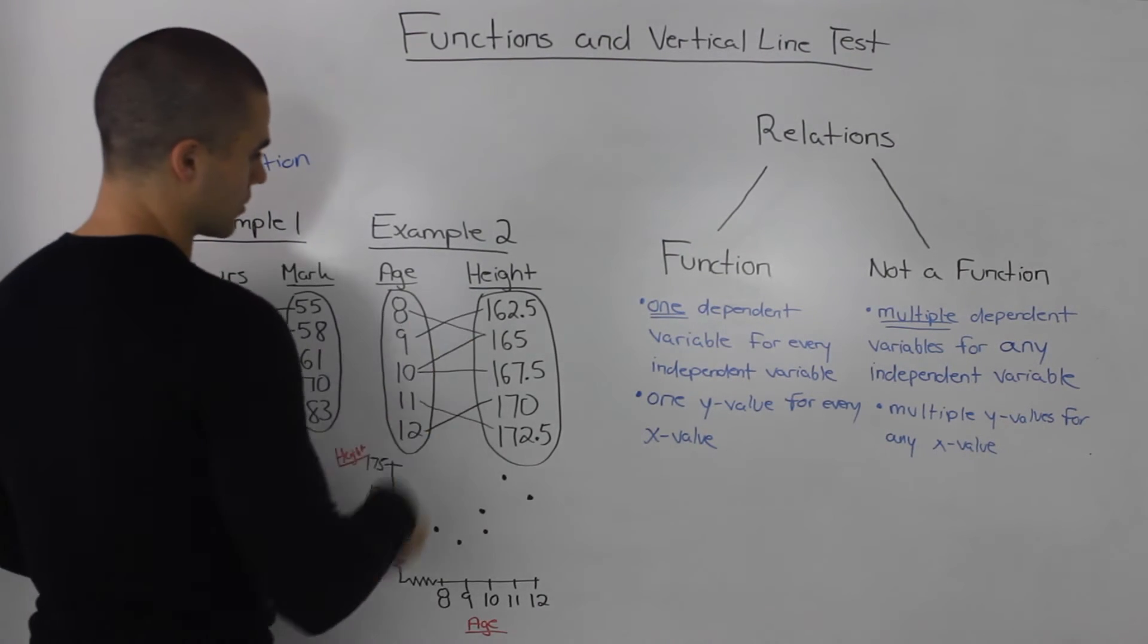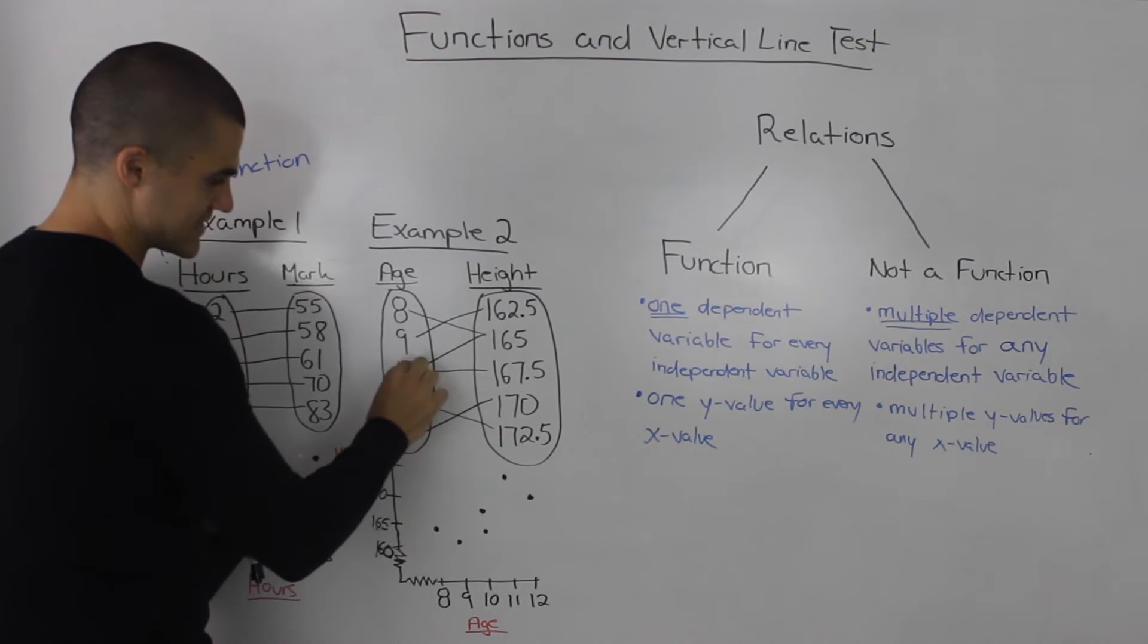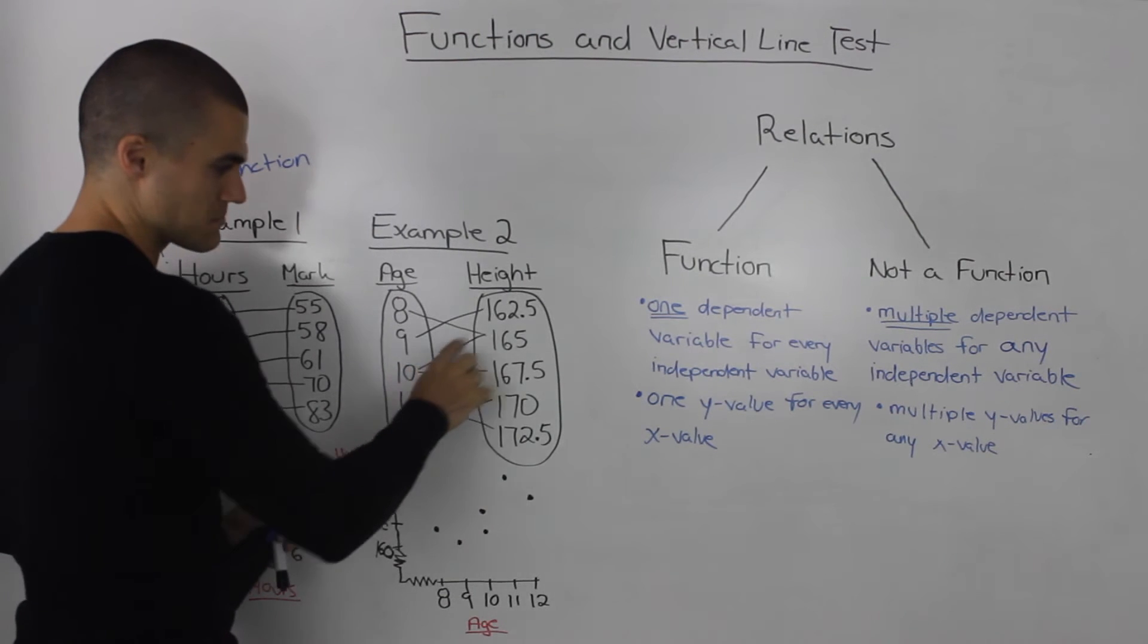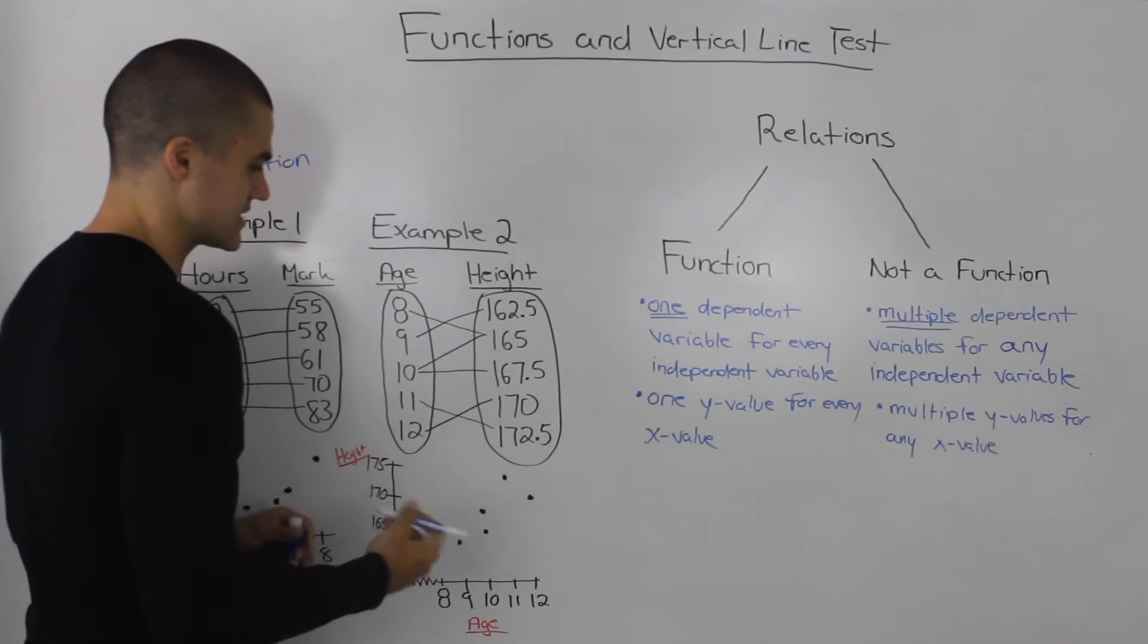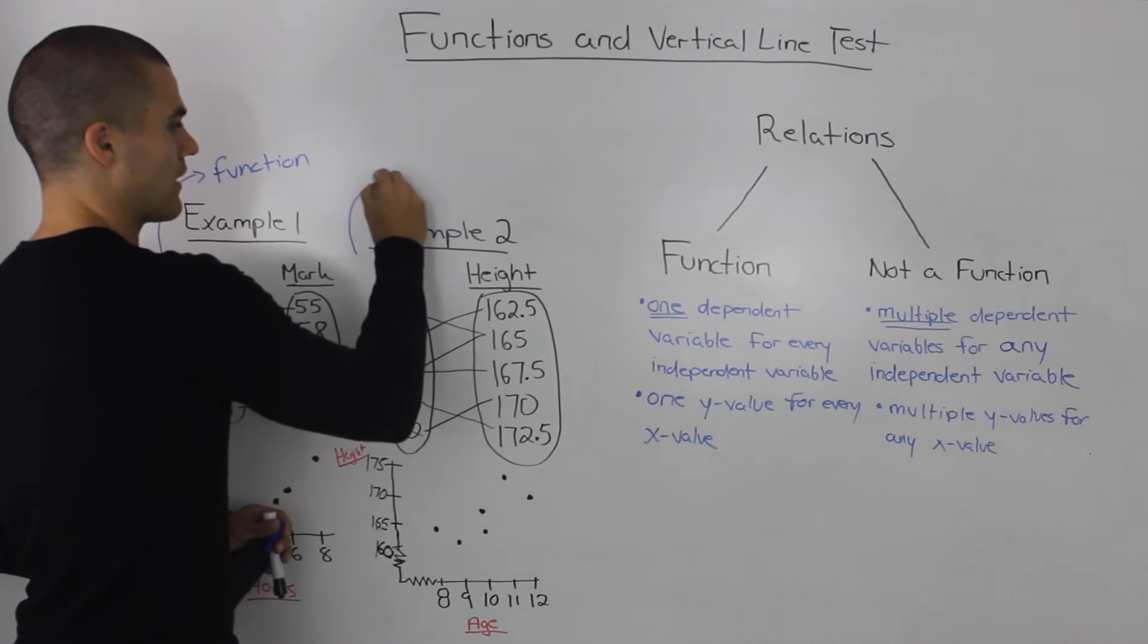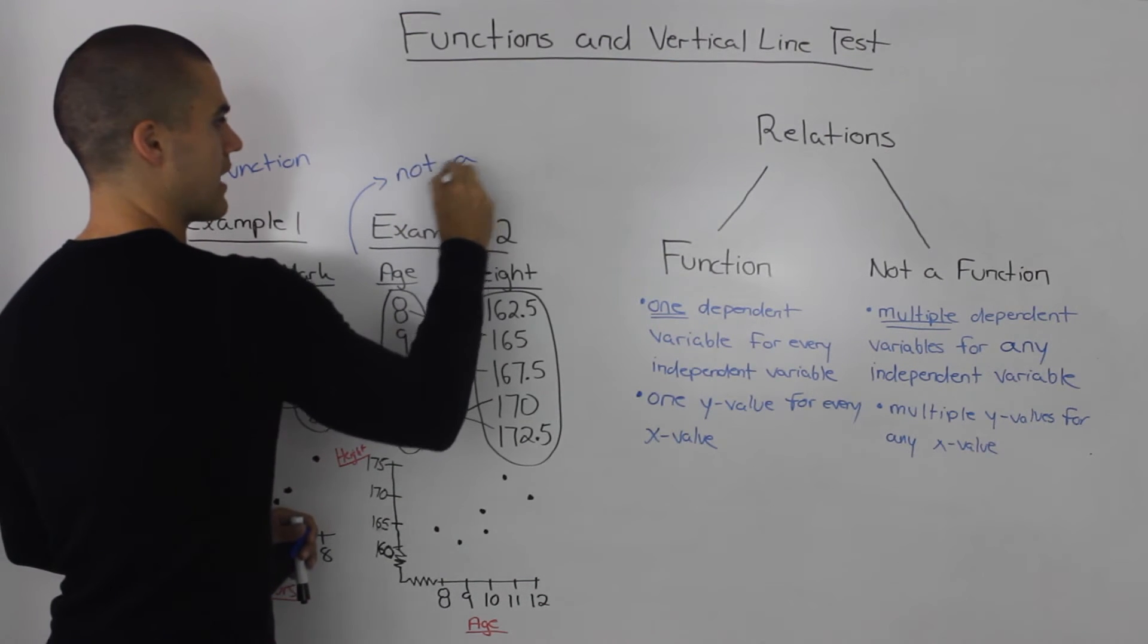Now looking at our second relation, notice how this 10, this independent variable 10 has multiple dependent variables attached to it. It has this 165 and this 167.5. So right away we know that this example here is not a function.